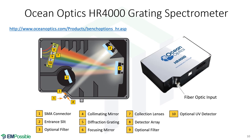Here's a grating spectrometer sold by Ocean Optics. A fiber optic cable comes in, light comes out of the fiber, bounces off a mirror, hits a diffraction grating, starts to separate, and then hits a CCD. The pixels on one side are measuring violet and blue light, while other pixels measure green, yellow, orange, and red light across the CCD. It outputs a plot of how much of each color is in your light. It's a nice compact, low-cost device.